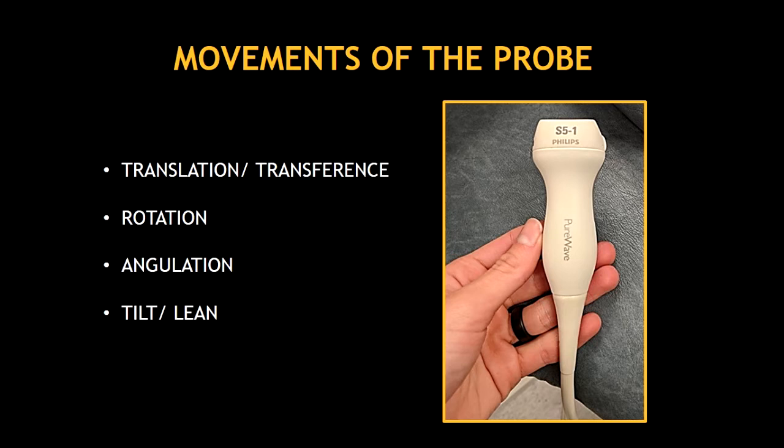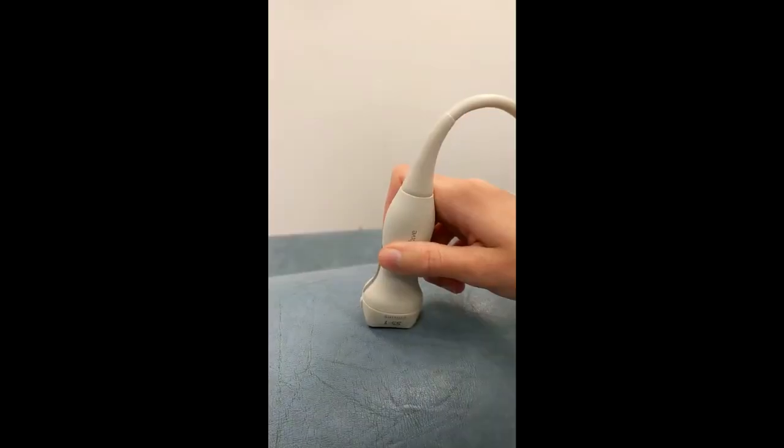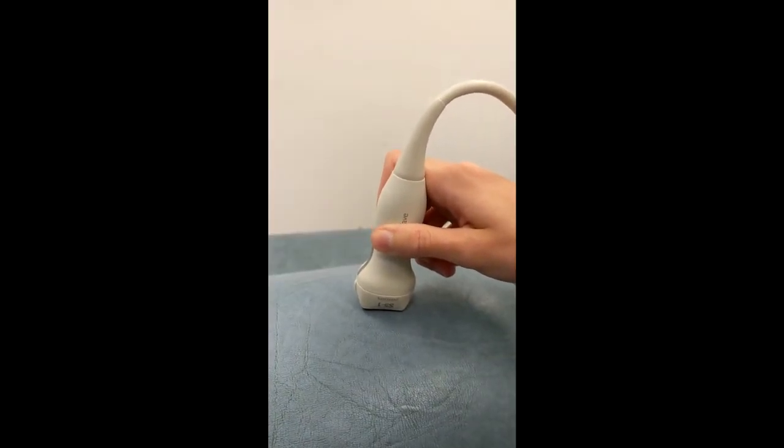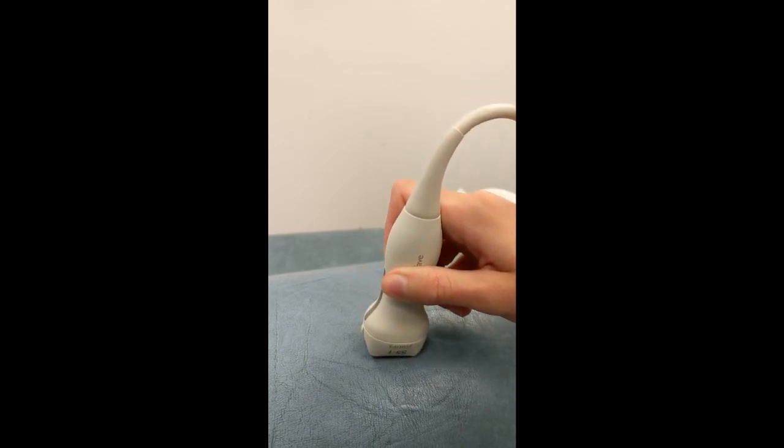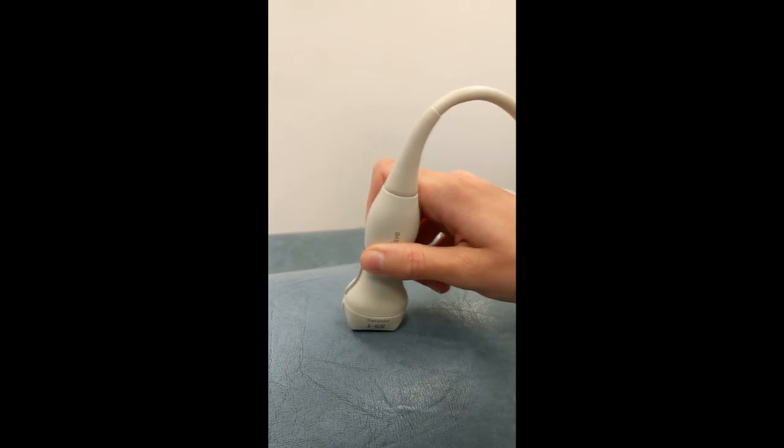I'm going to describe now one by one each movement and it's going to be followed by a video. Translation or transference is when you move or transfer the probe to another area on the patient's chest in any direction. In this video I'm translating the probe, which is moving the probe from one area to another one without doing any other movement.